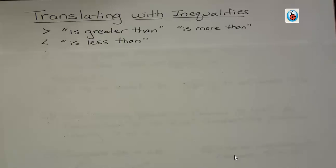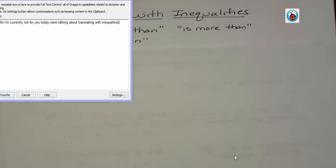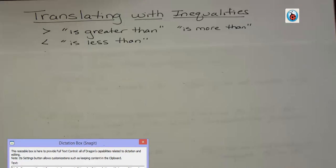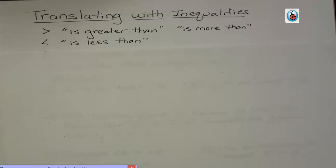When you have a symbol that's pointing to the right, that is the greater than symbol. And when you have the arrow that's pointing to the left, that is the less than symbol.